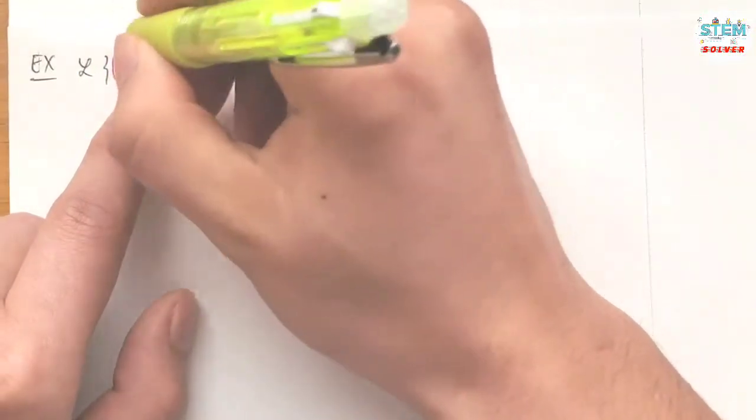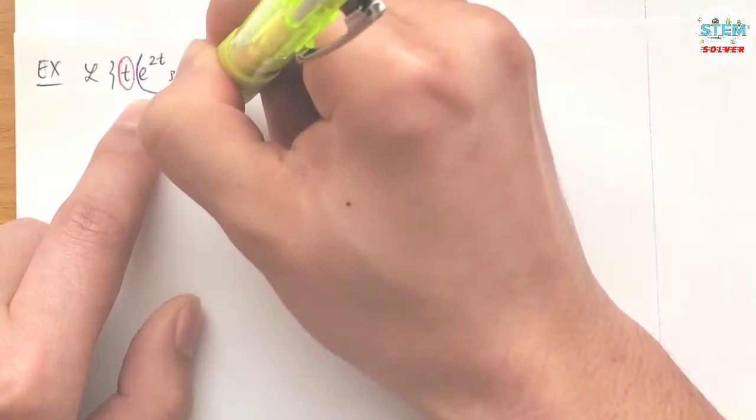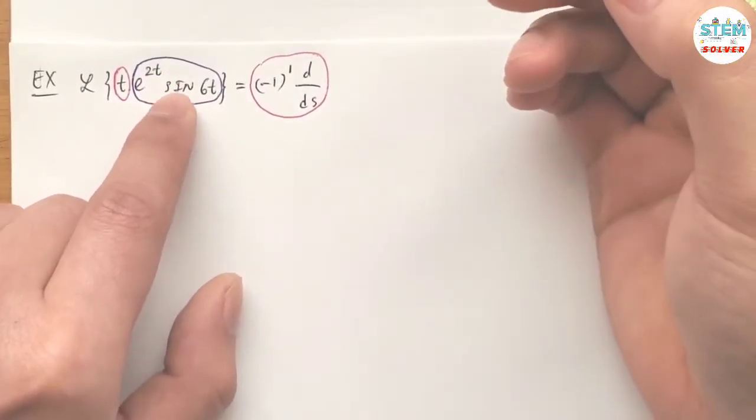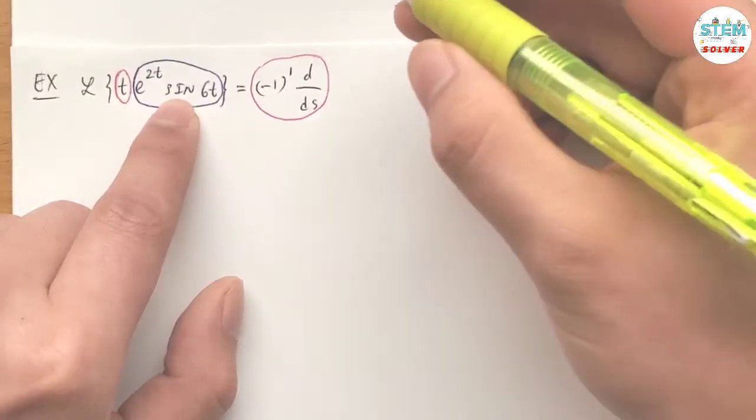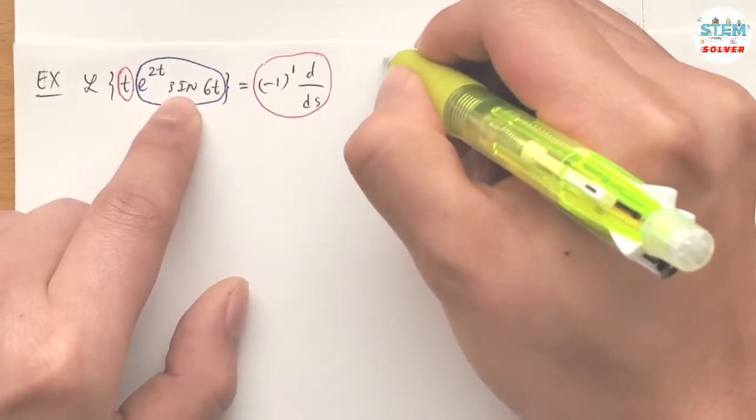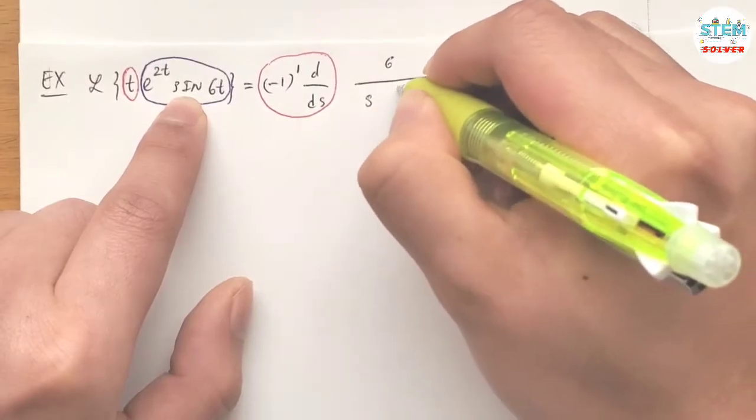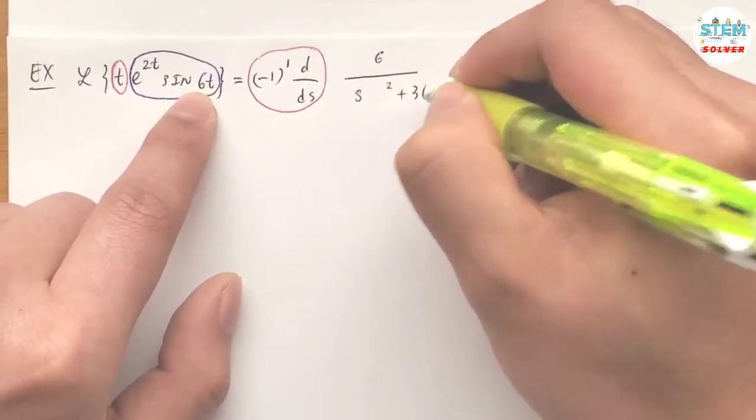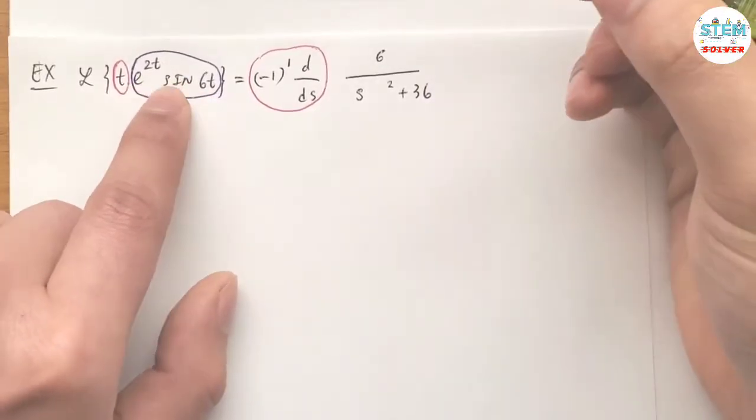And for this one, I'm gonna take the Laplace transform of this, so the Laplace transform of this is 6 over s squared plus 36.